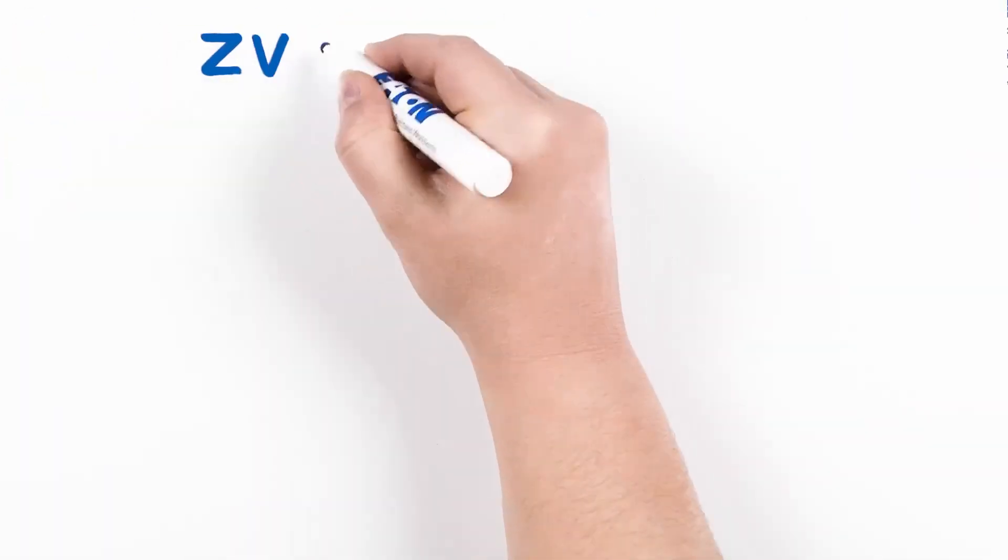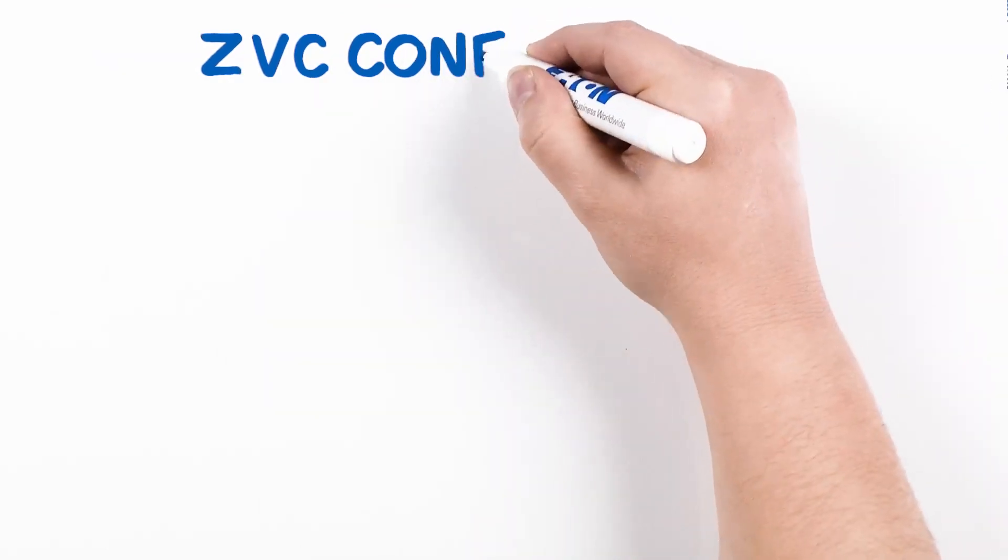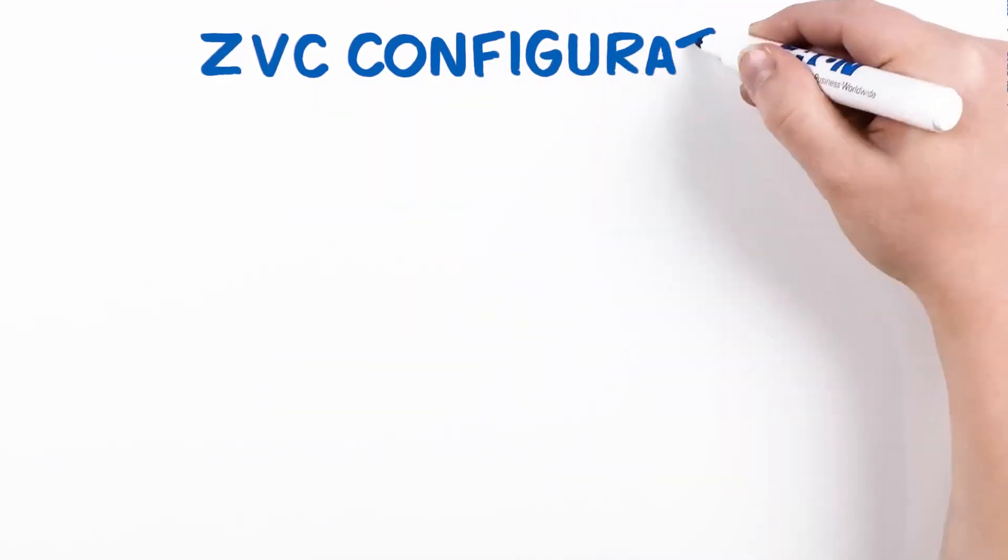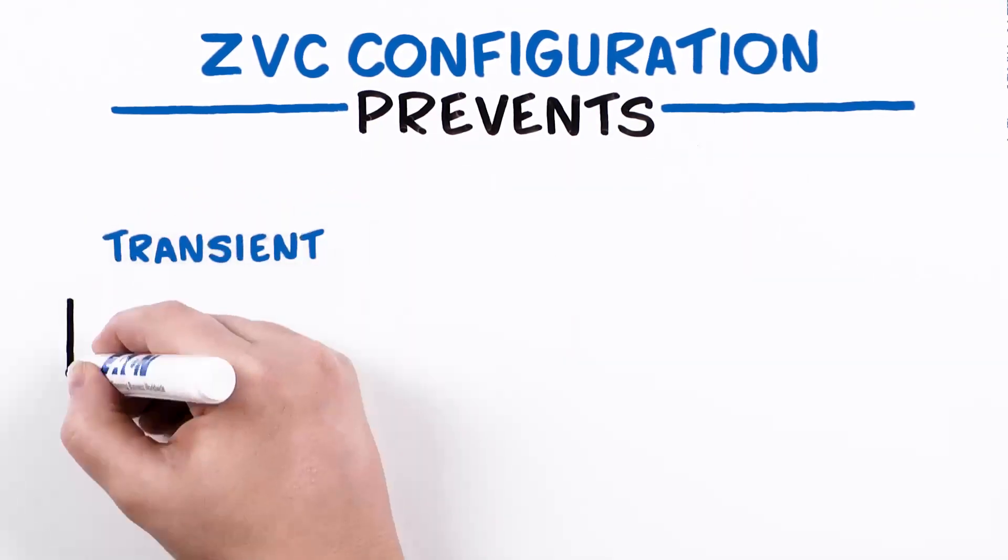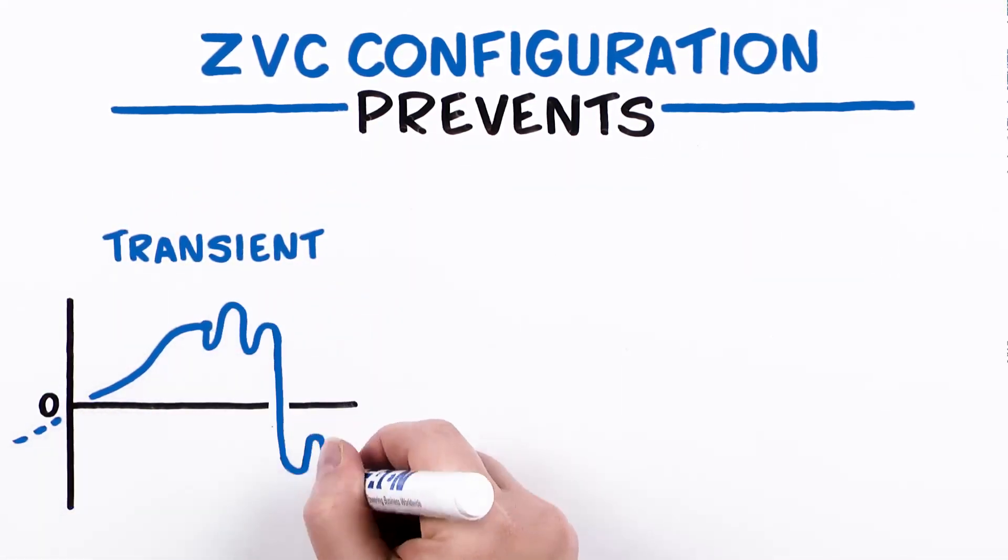All Tri-Sync ratings are available with a zero voltage closing, or ZVC configuration, which can prevent damaging switching transients that may occur under typical switch operation.